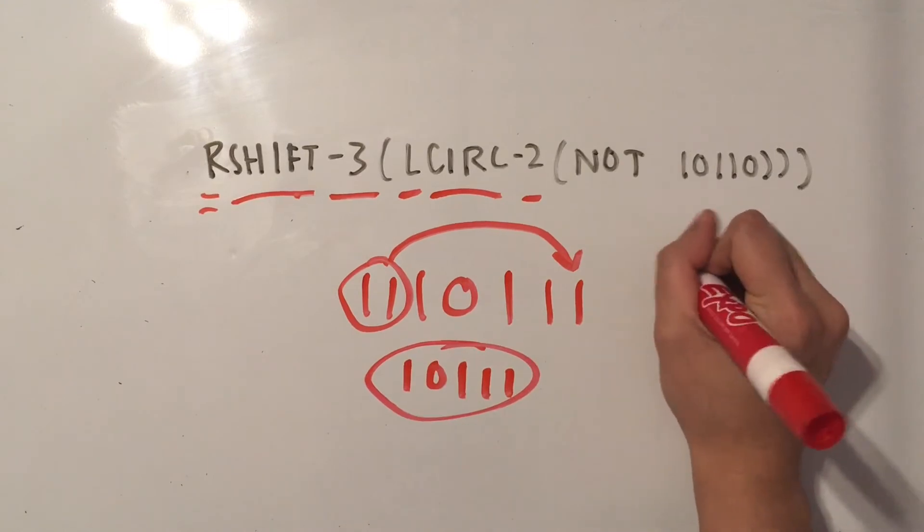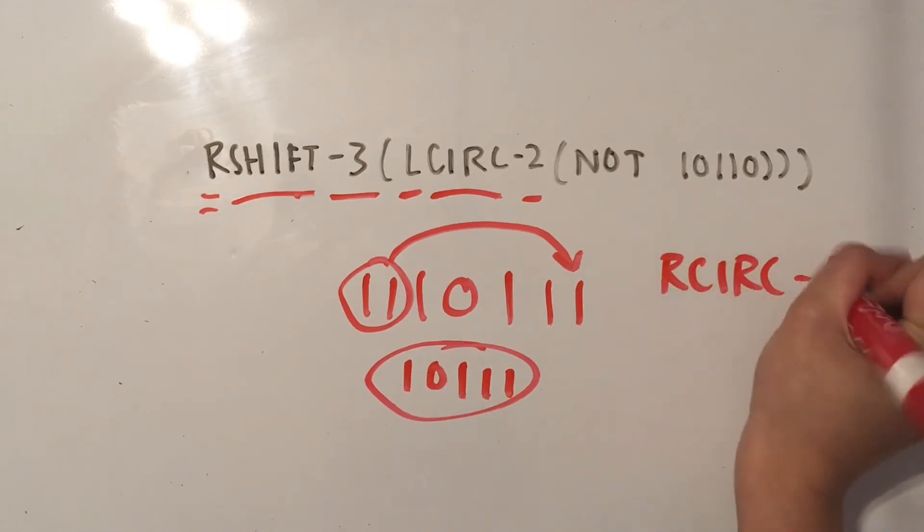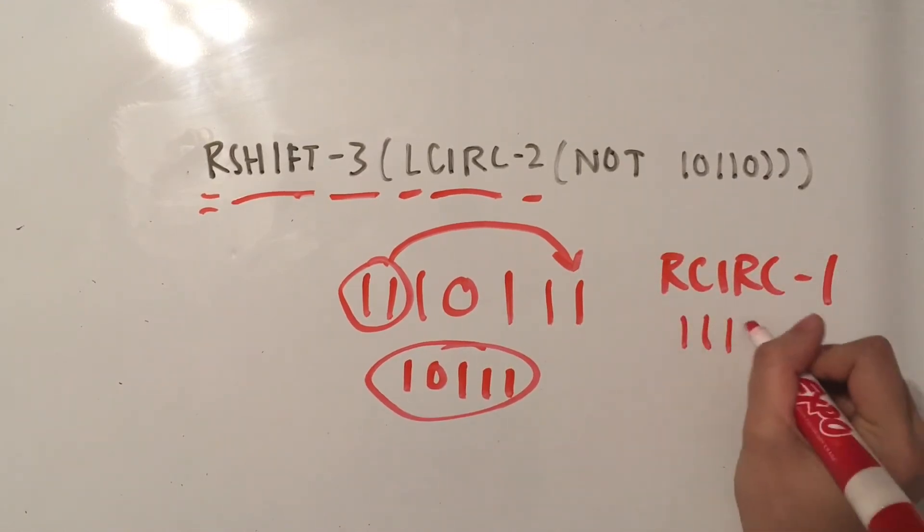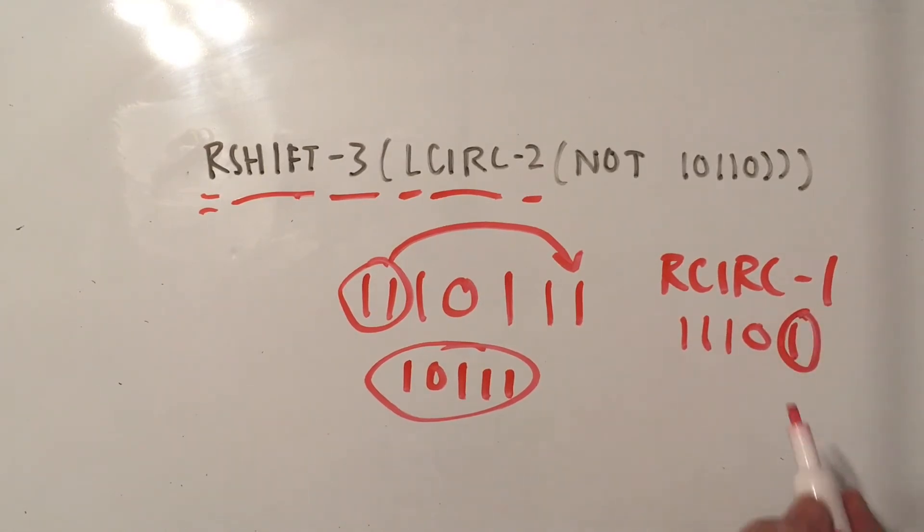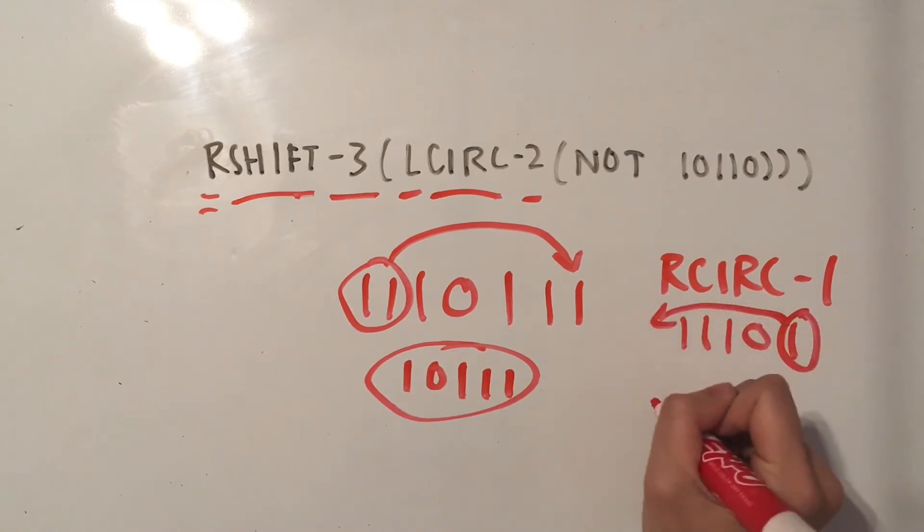If we had R circ 1 with the same number, then we go on the right side, we take the rightmost first number, and then we circle it over to the left.